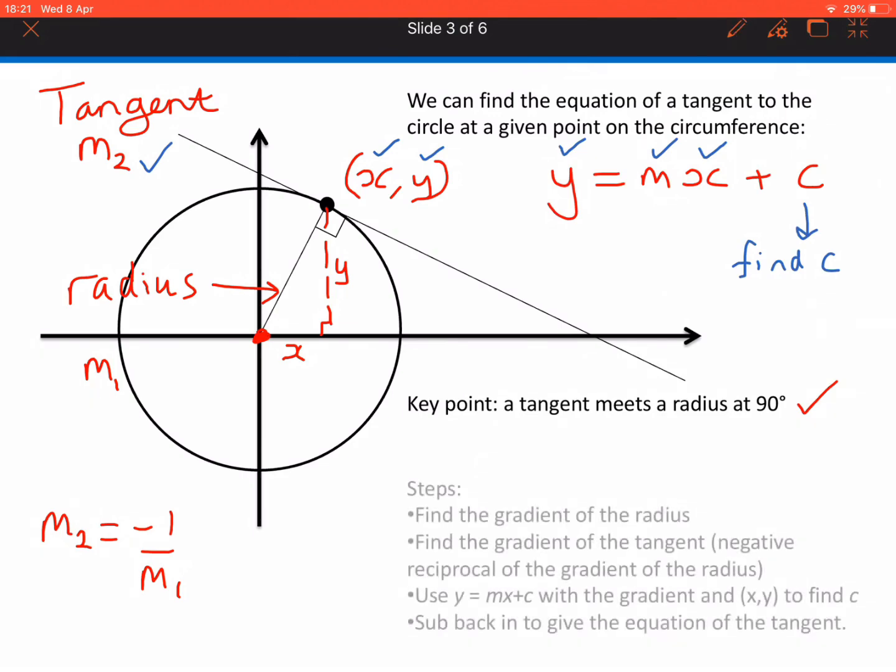So here are the steps. The first step is to find the gradient of the radius. Then we find the gradient of the tangent because it's the negative reciprocal of the gradient of the radius.